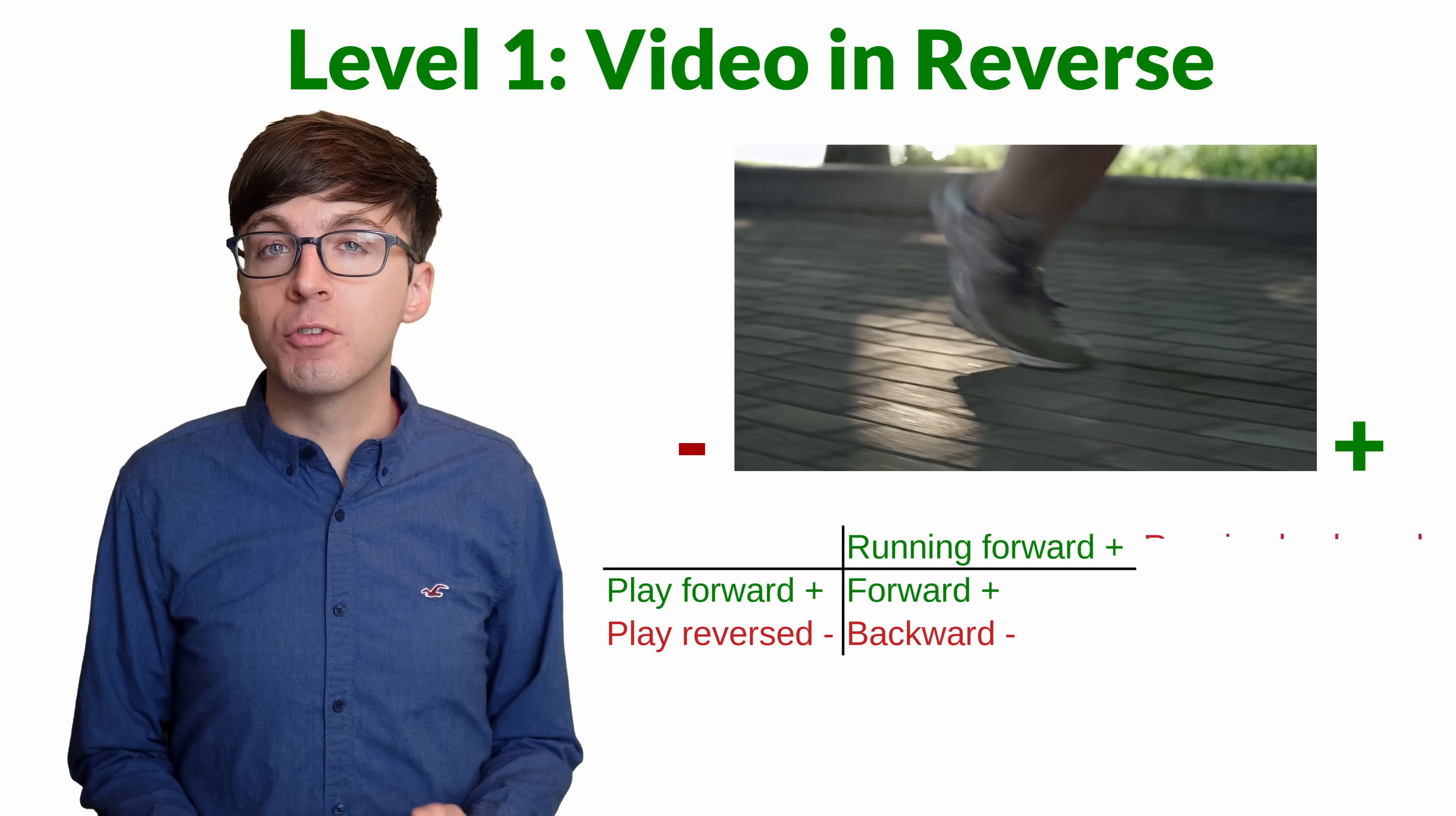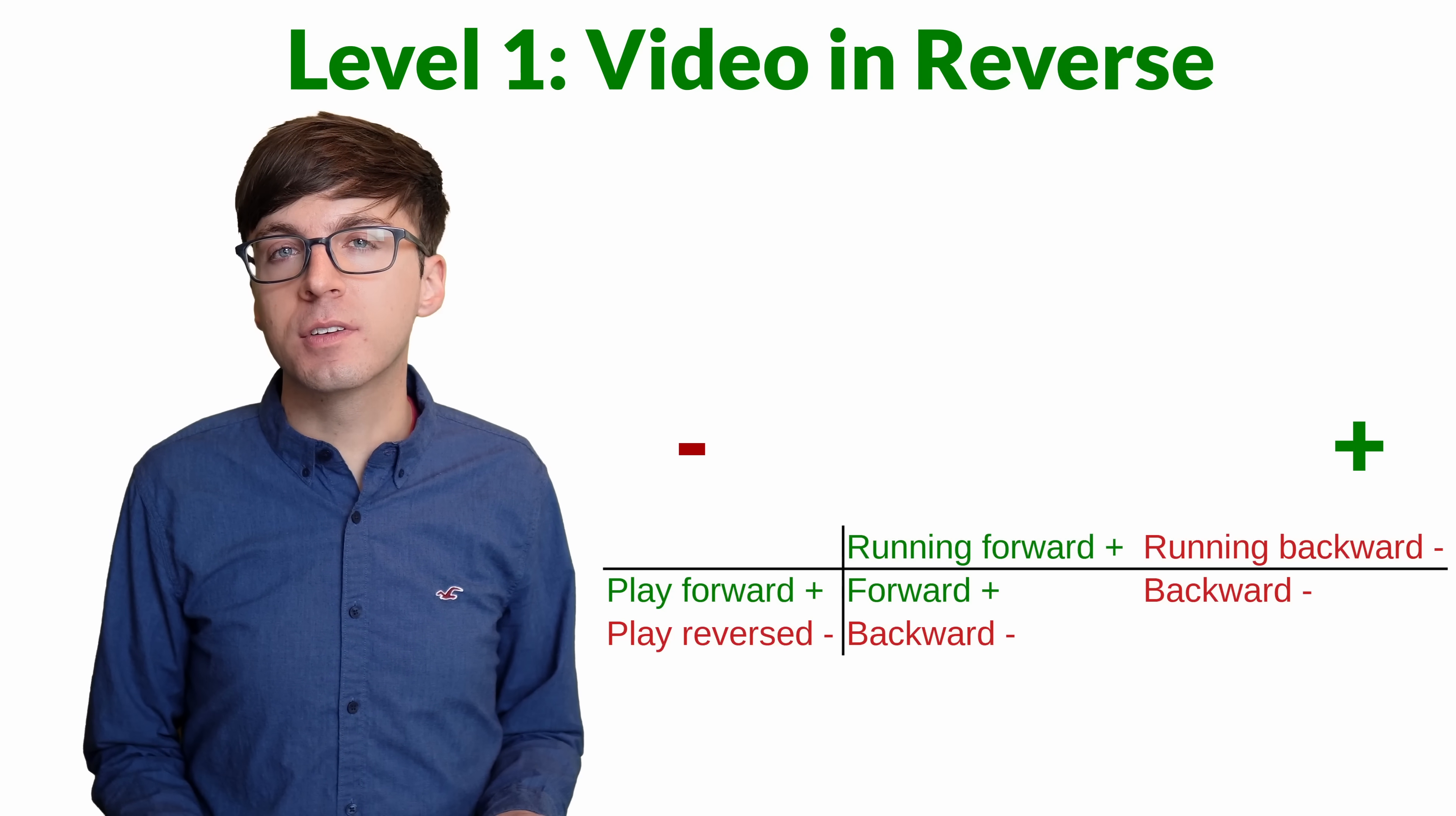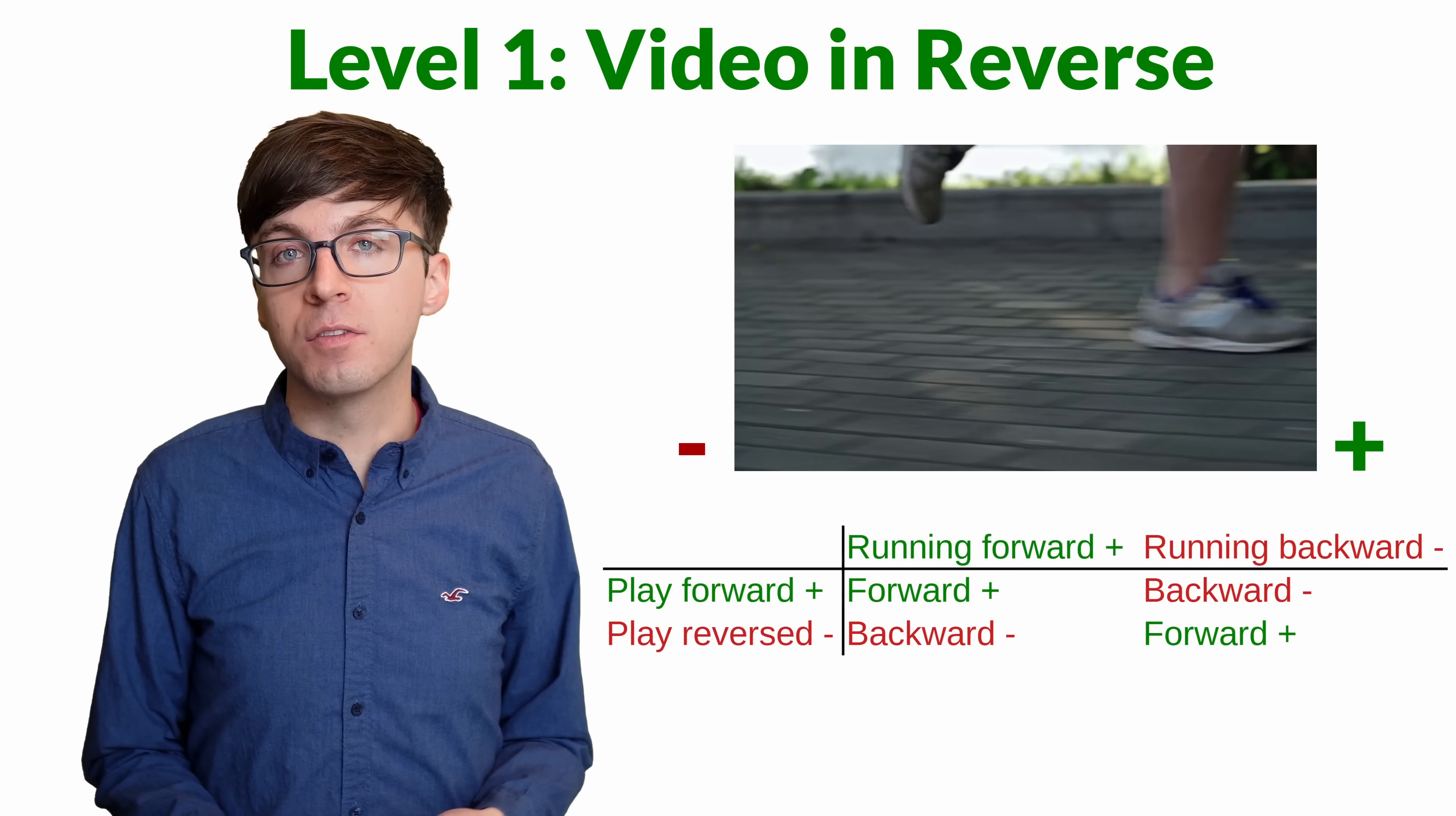Now consider if the original clip shows someone running backward. When we play the clip, the person runs backward, which is negative. But what happens when we play that clip in reverse? Now the person appears to be moving forward in the positive direction. In symbols, negative movement times a negative playback speed equals positive movement.